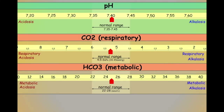A compensation occurs when one element tries to compensate for a derangement in the other element. For example, the respiratory component may try to compensate for a derangement in the metabolic component.